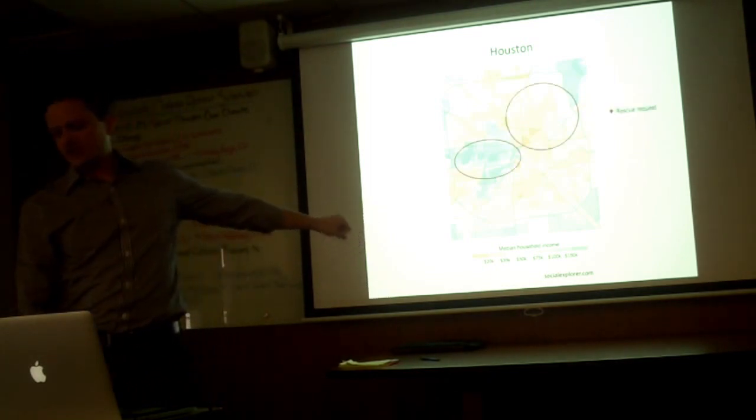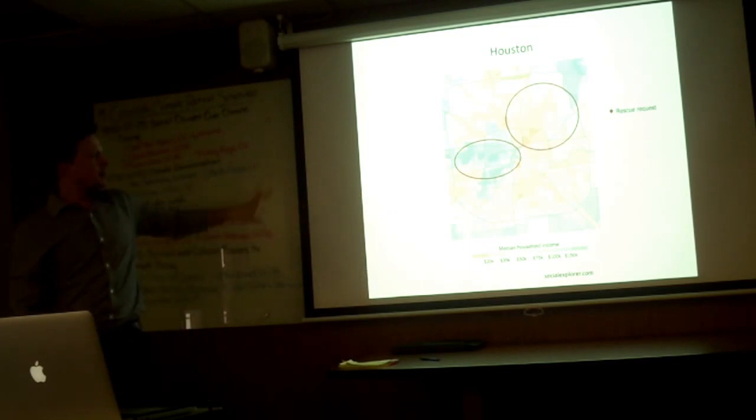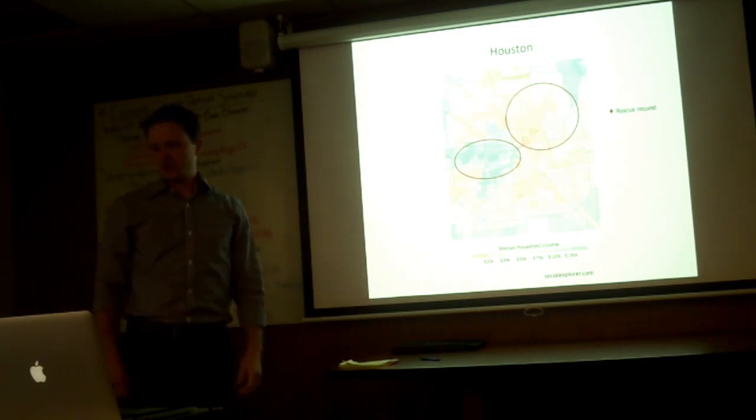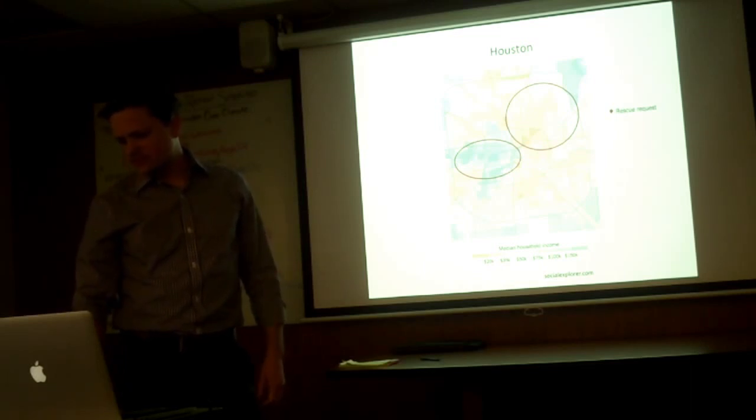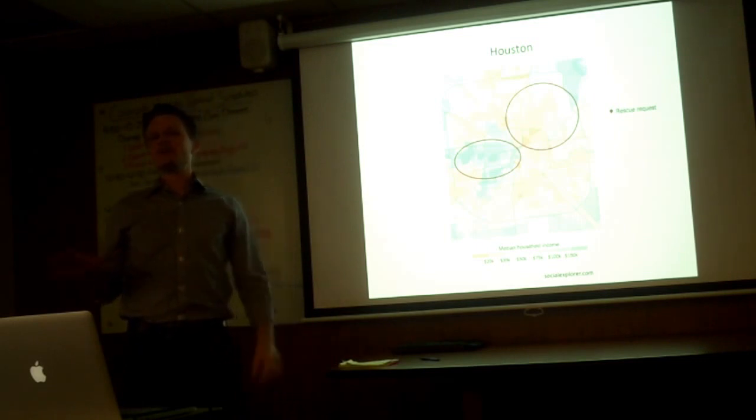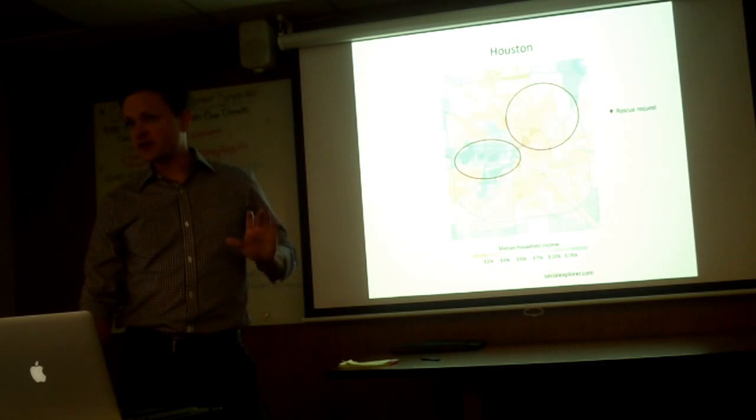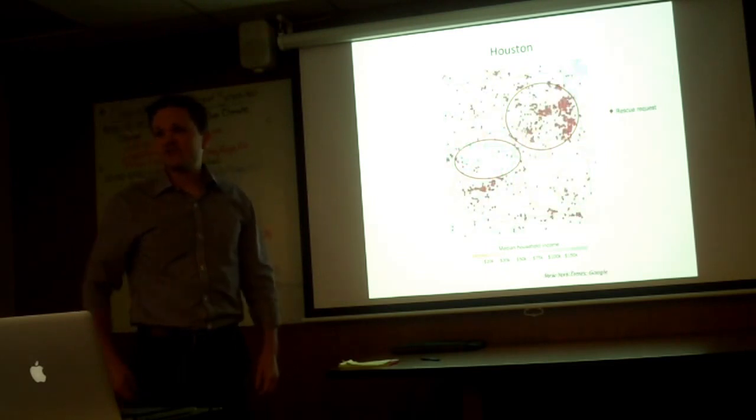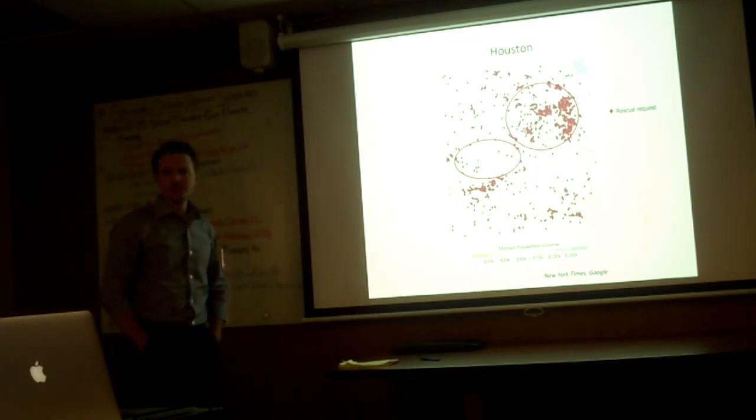So on the left, you'll see wealthier areas in the south and west in green. On the right, poor areas in the orange and darker orange in the north and east. The red dots here show rescue calls that went out based on Google tracking data right as the hurricane was hitting through the first 24 hours of the storm.